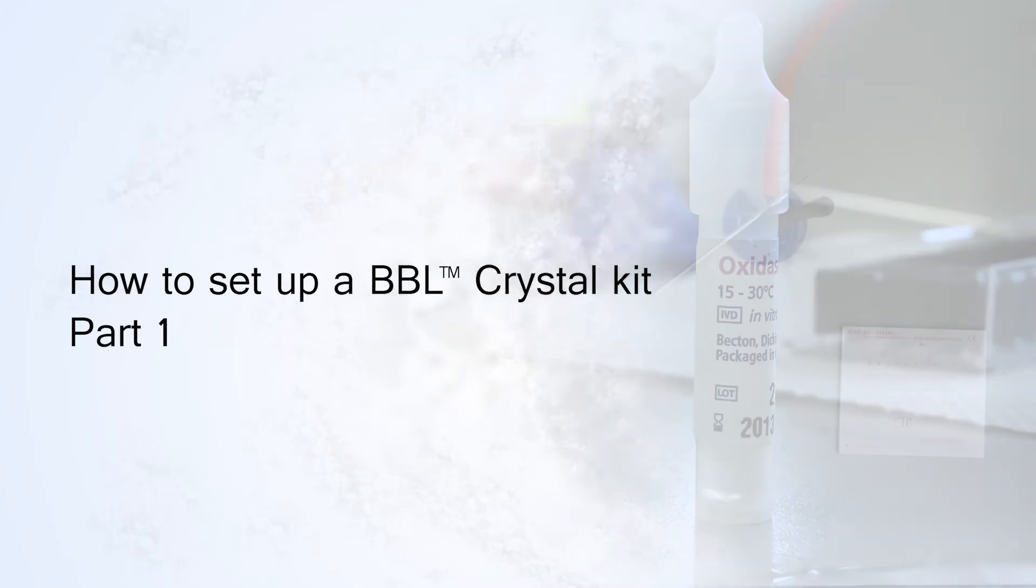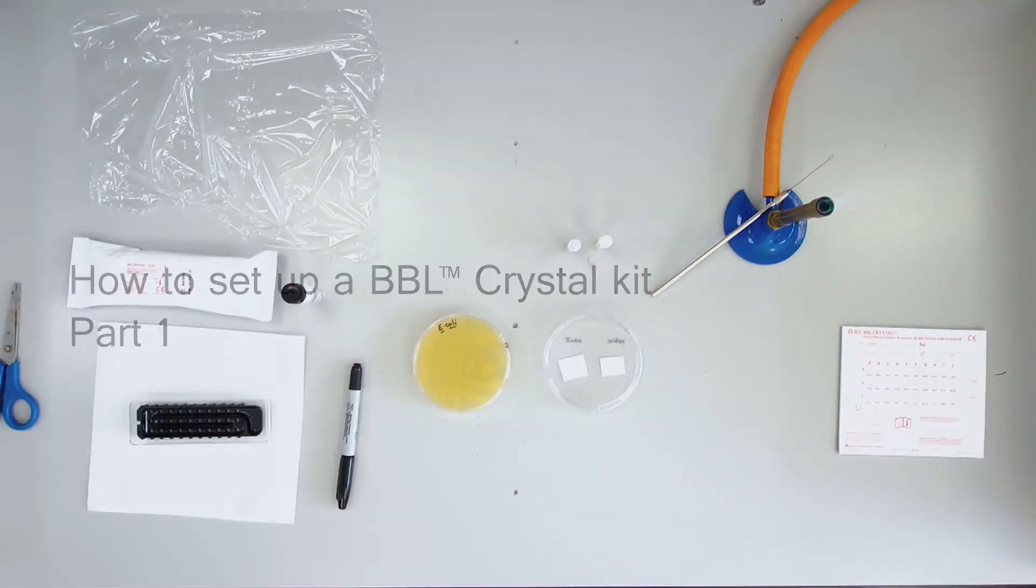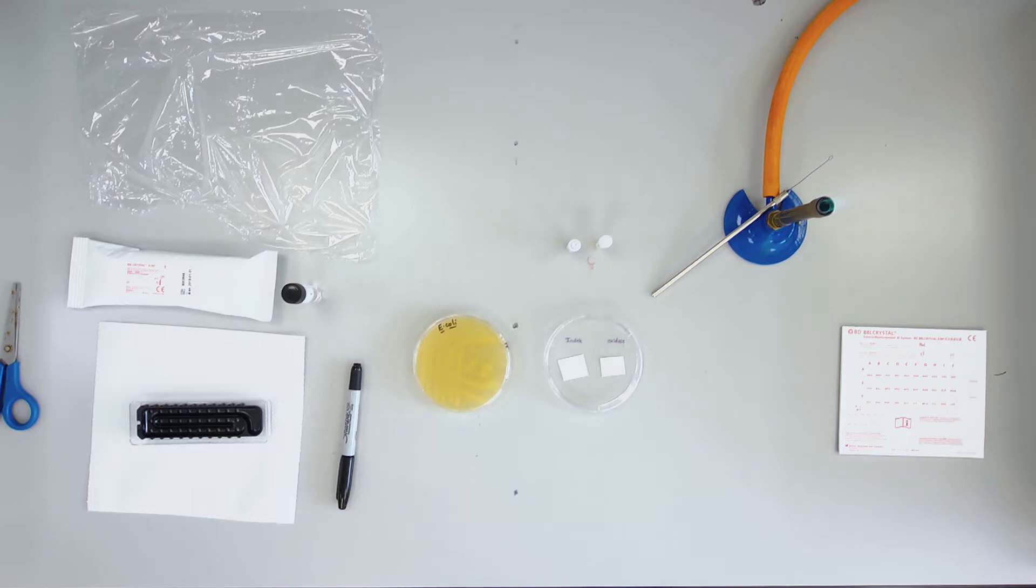How to set up a BBL crystal kit. You will be provided with a streak plate of a pure culture on 4% tryptone agar.